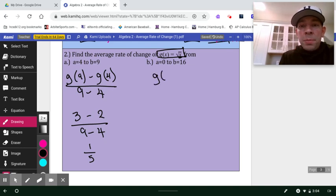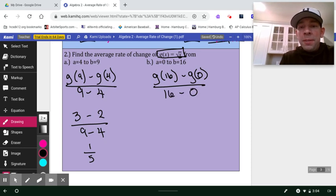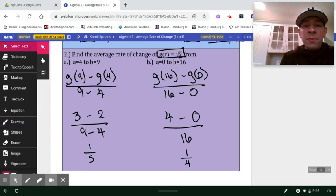How about this? g of 16 minus g of 0, all over 16 minus 0. Substituting a 16 for x makes 4. And substituting a 0 makes 0. And 4 over 16 reduces to 1 fourth. So there's those slopes or average rates of change.